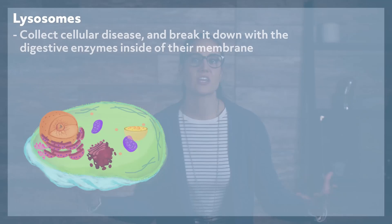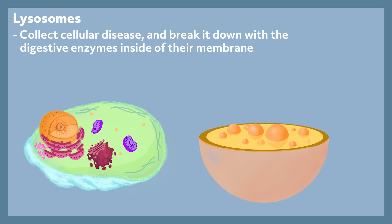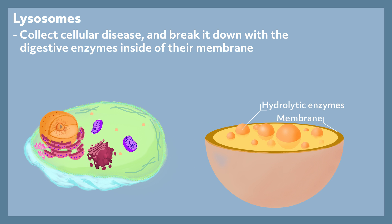Lysosomes. Lysosomes are the guys that keep the cell community clean. They go around and collect cellular debris, breaking it down with the digestive enzymes inside their membrane. Cellular debris may mean cellular matter that is too old to function efficiently, or really anything in the cell that is not useful to cell function. Lysosomes are typically found in greater numbers within white blood cells, because white blood cells need to digest more unwanted material than other cells.